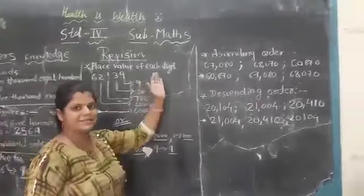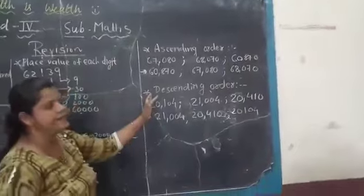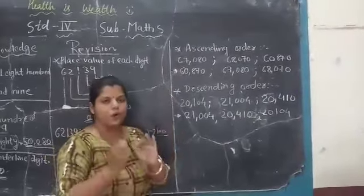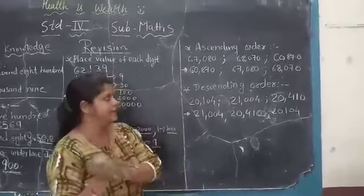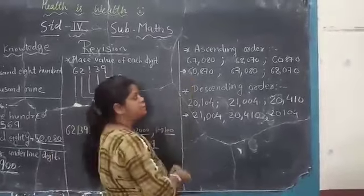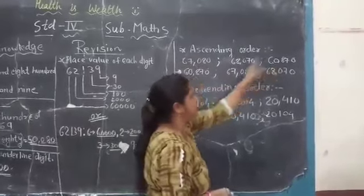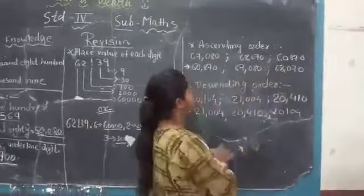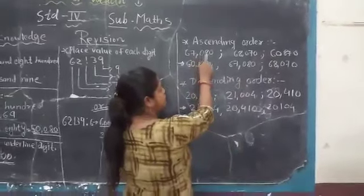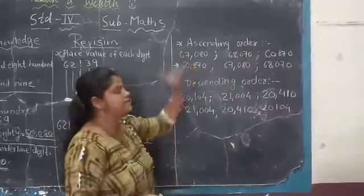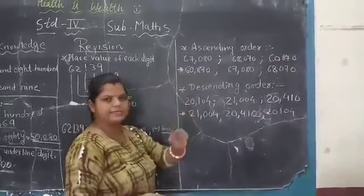Now, our next exercise, ascending order and descending order. In ascending order, as you know, we go from small number to the bigger number. So what is the method to arrange them? First of all, you check the digits of the given number. All three numbers, there are five digits. 1, 2, 3, 4, 5. All are five digits. Now, all the digits are same.